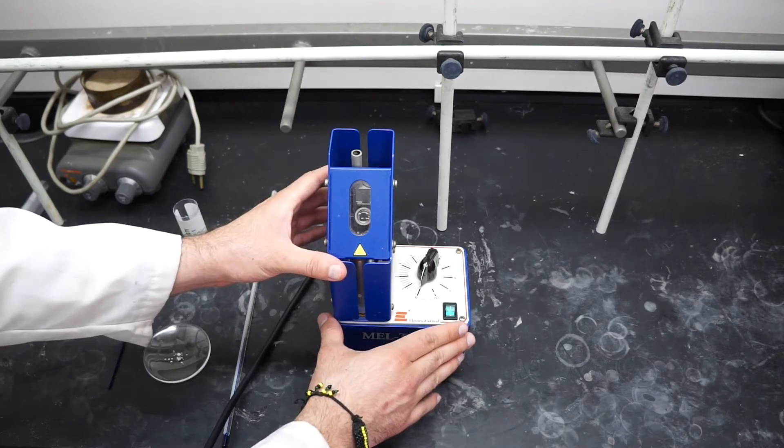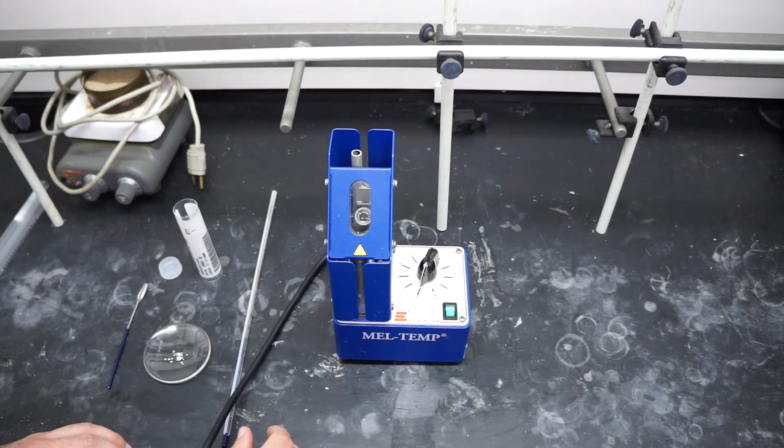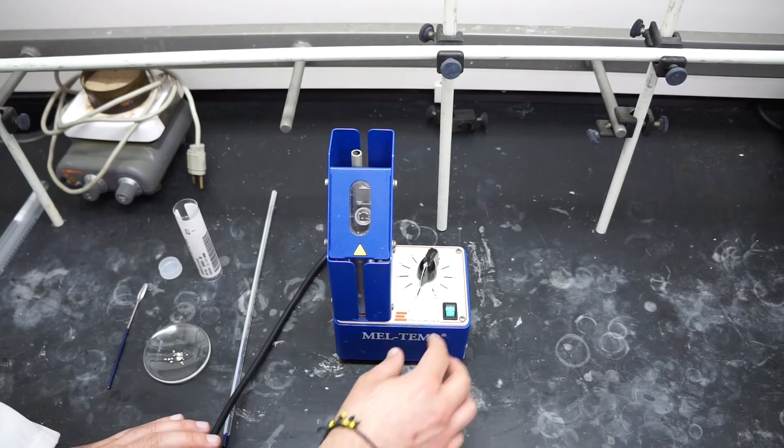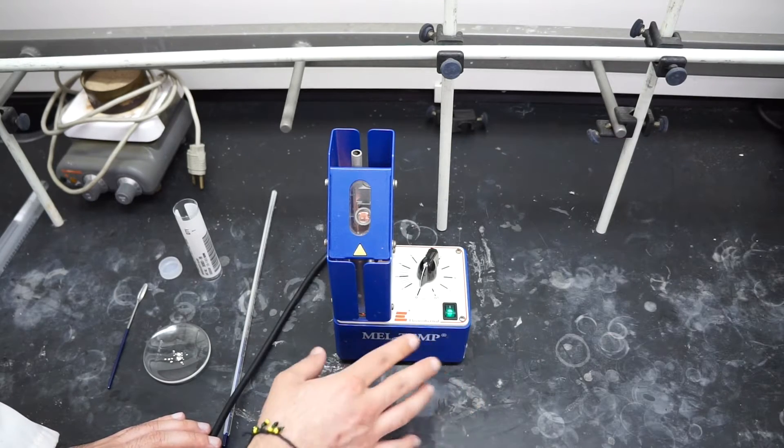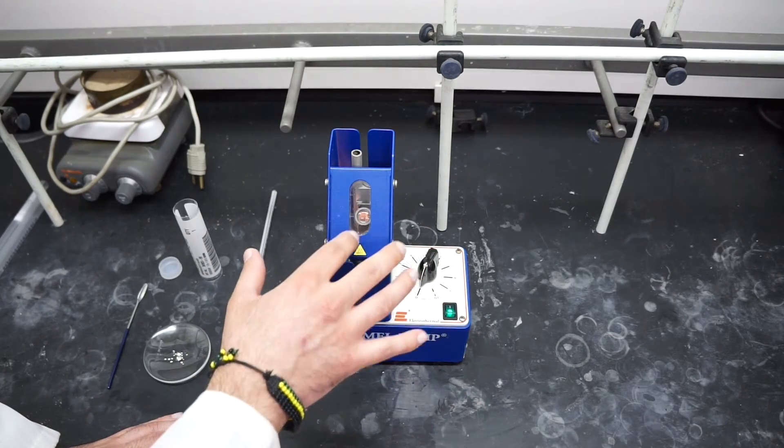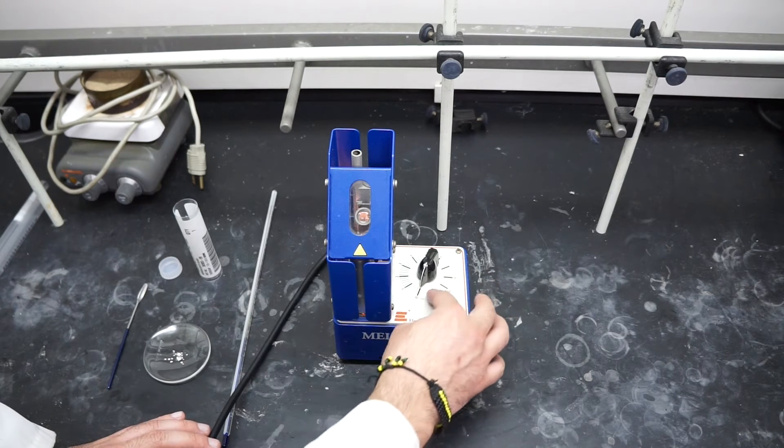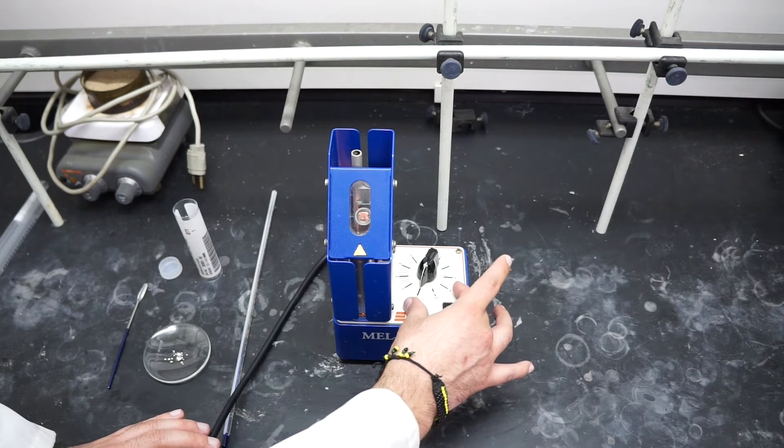And most importantly, you're going to need your MELTEMP. Now, your MELTEMP, what this does is you can go ahead and turn it on. And when you turn it on, a light goes on in the background. And this little knob right here is your temperature control.